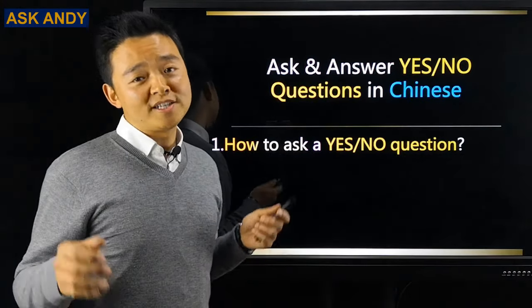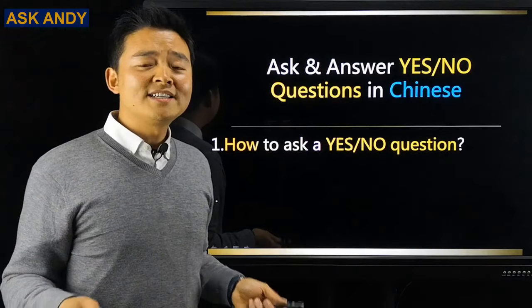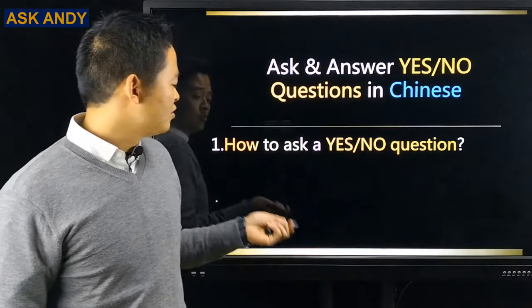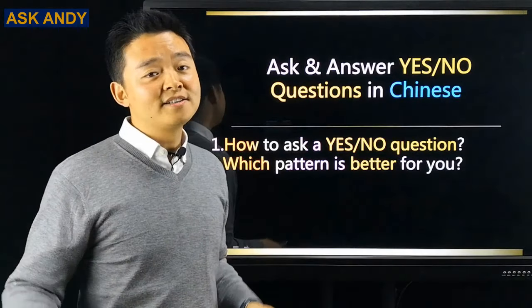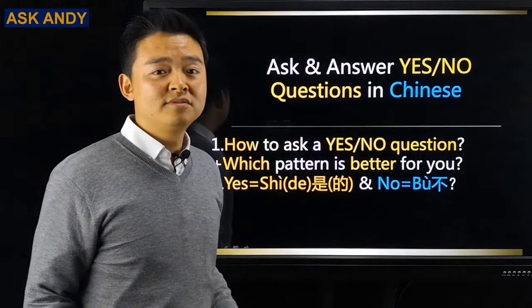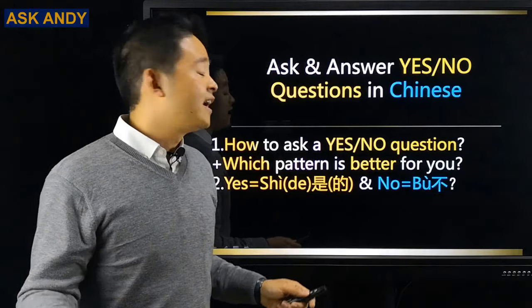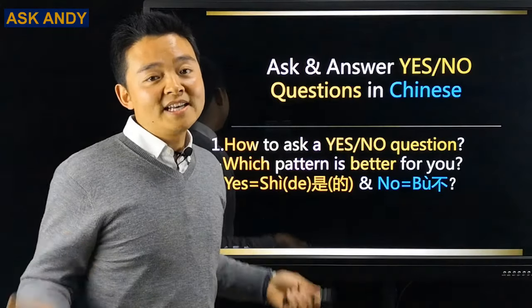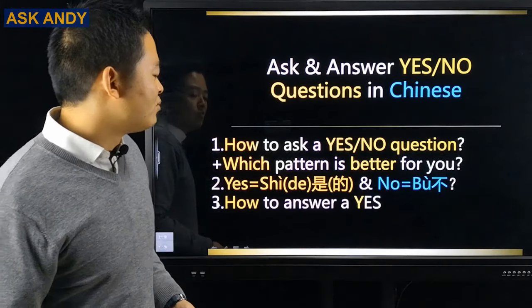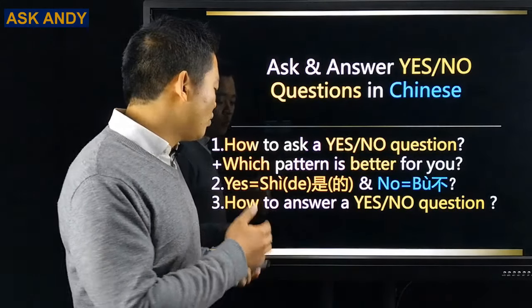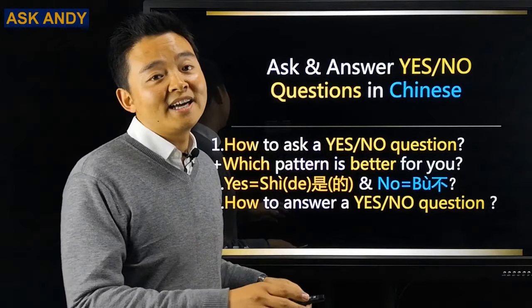I'm going to answer three questions. Question number one: how to ask a yes or no question in Chinese? Maybe you have known that there are two patterns for asking a yes or no question in Chinese. I'm also going to let you know which pattern is better for you to use as a Chinese learner. Question number two: yes equals to 是的 and no equals to 不 — is that right? You probably would find the translations for yes and no with 是的 or 不 in most dictionaries. Question number three: how to answer a yes or no question? Because the way we answer a yes or no question is different from that in English.